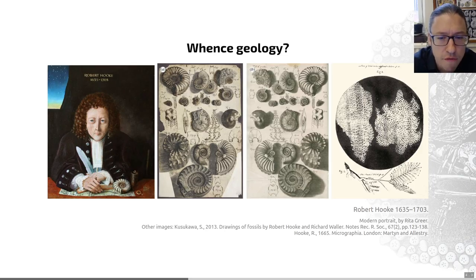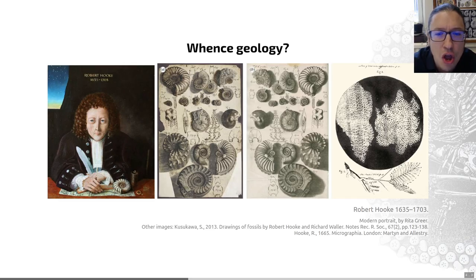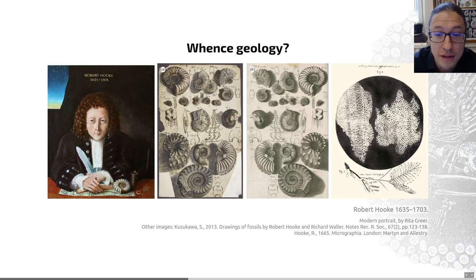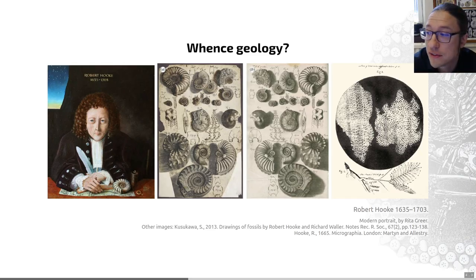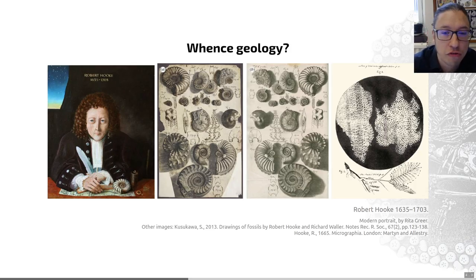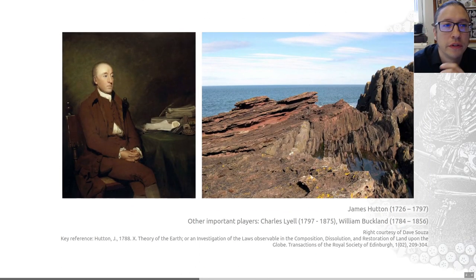A direct quote: 'There have been many other species of creatures in former ages of which we can find none at present. And that is not likely, also, but then there may be diverse new kinds now which have not been from the beginning.' These were actually quite advanced thoughts for the turn of the 18th century. Robert Hooke was an important gentleman who made a lot of important observations.